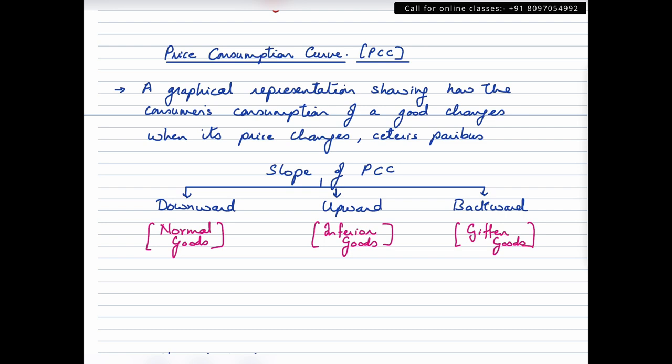So whenever the price of the commodity becomes higher, the consumption of that particular commodity might fall, or if the prices fall, the consumption of that commodity might go up. Now when we talk about a curve, it is supposed to have a slope. So when we talk about PCC, it has three different types of slopes.